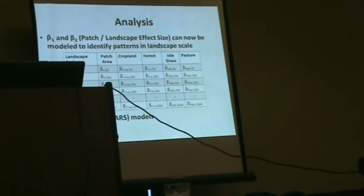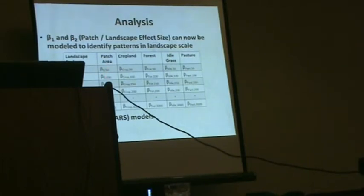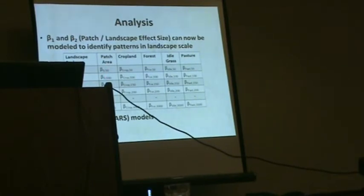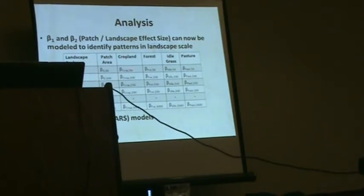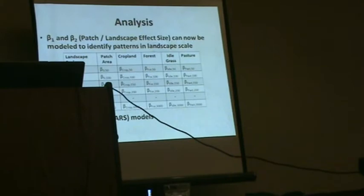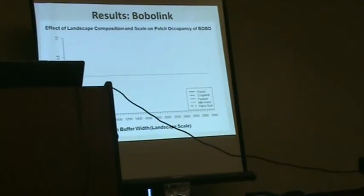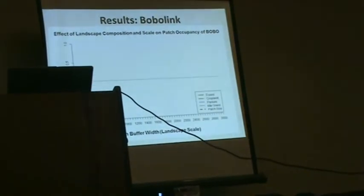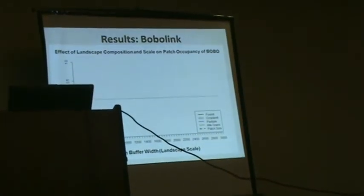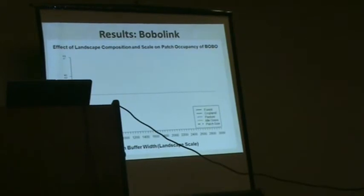We've got our scale on one axis and the effect size of patch area, which doesn't change because the actual patch doesn't change with scale. But the effect of cropland, for example, is going to change with scale. Once we've built this, we use nonparametric MARS models to look at how these patterns change through space. We'll walk through the Bobolink example, since people can be really interested in Bobolinks, and we'll go through that example really slowly.